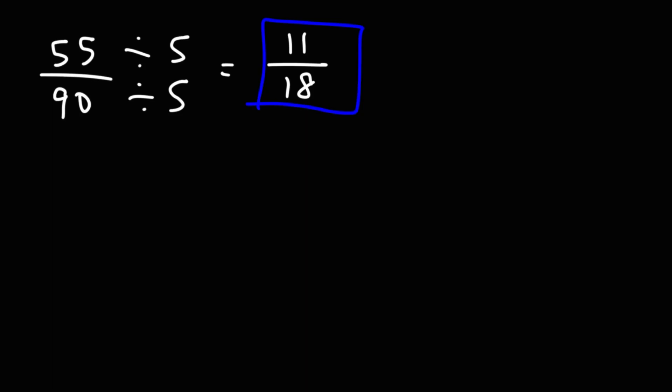So just to recap. If you're simplifying fractions and you notice that the numerator and the denominator are both even, you could start by dividing by 2. If you have an odd number, you could see if they're divisible by 3. If both numbers end in either 5 or 0, you could try dividing by 5. Now you could divide by other numbers, but you need to know your multiplication tables well. But for most problems, dividing by these numbers will be quite common. That's it.